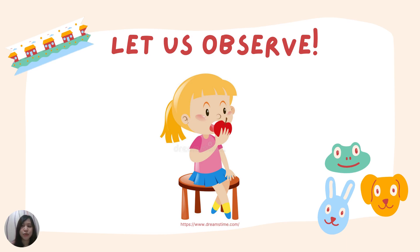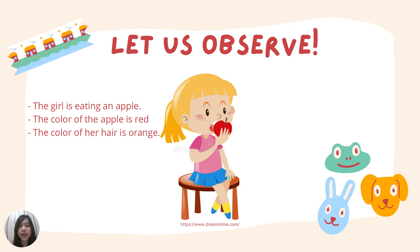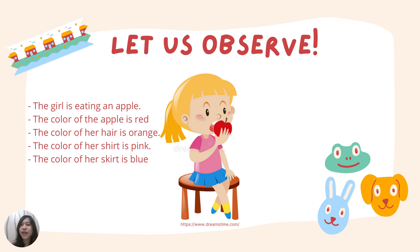Let us observe this picture. What can you say about it? Since we can only see this picture, you will use your sense of sight to gather some information about this girl. If your answer was like this, then you got it correct.